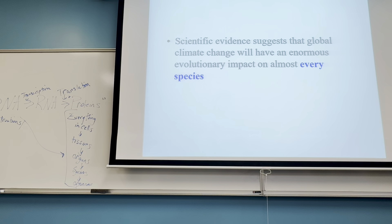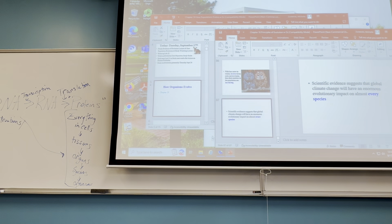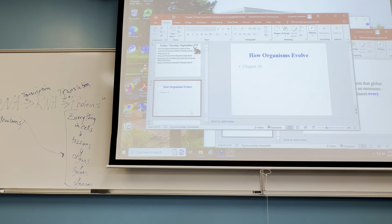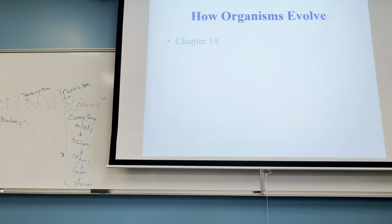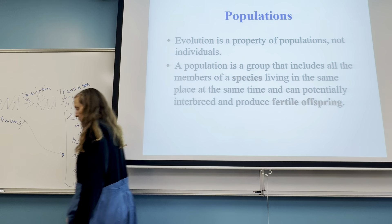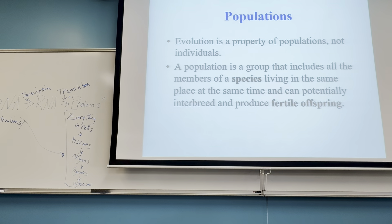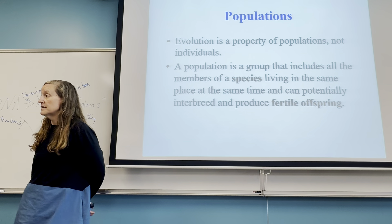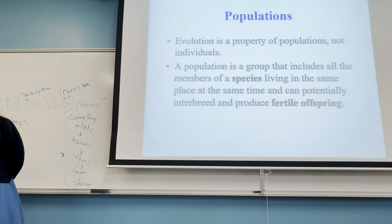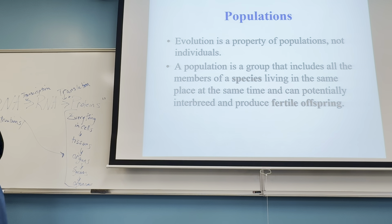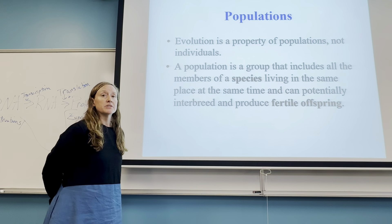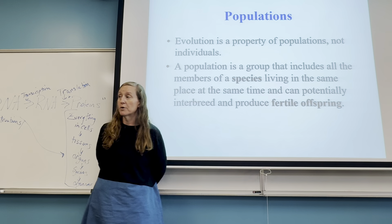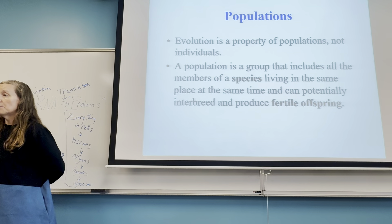Now let's get into population evolution in more detail. A population is a group of organisms of the same species who live in the same place at the same time and can potentially interbreed. One very important thing in terms of evolution is that species within a population whose mating pairs can have fertile offspring — successful reproduction is a very important part of evolution for keeping a population going.